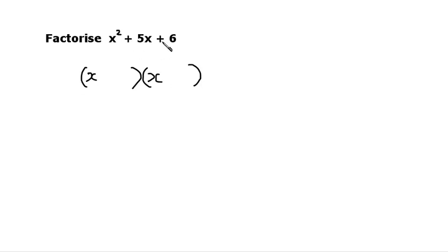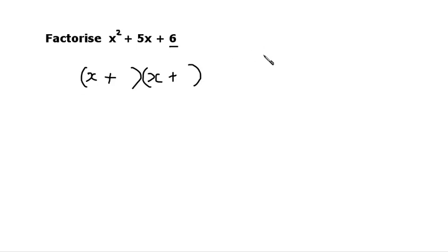Then we look at our signs. If they're both positive, then both of the signs in the answer will also be positive. So we can put those in now. To work out what goes at the end of each bracket, we have to look at the number at the end of our expression, and we have to find all of the pairs of factors of that number. In this case it's 6. And 6 has 1 and 6 as a pair of factors, and 2 and 3 as a pair of factors.